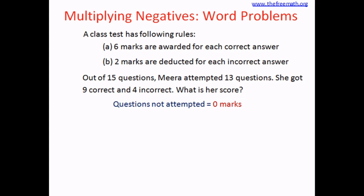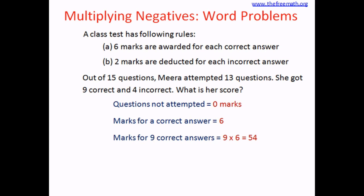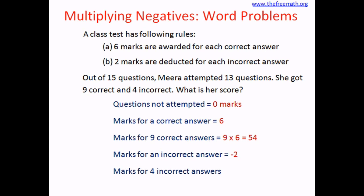So let's calculate the marks. Marks for a correct answer equals 6, and there were 9 correct answers, so 9 multiplied by 6 equals 54. Marks for an incorrect answer equals negative 2, and there were 4 incorrect answers, so 4 multiplied by negative 2 equals negative 8. Meera's score is 54 plus negative 8, which means 54 minus 8, and 54 minus 8 equals 46. So Meera's score is 46.